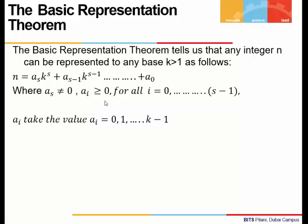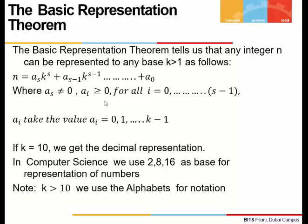The coefficients take values from 0 to k minus 1. In our day-to-day life, we use base 10, which means k value is 10. Any integer can be represented to base 10. In computer science, we use base 2, 8, 16, and whenever we take a base greater than 10, we use alphabets for notation.